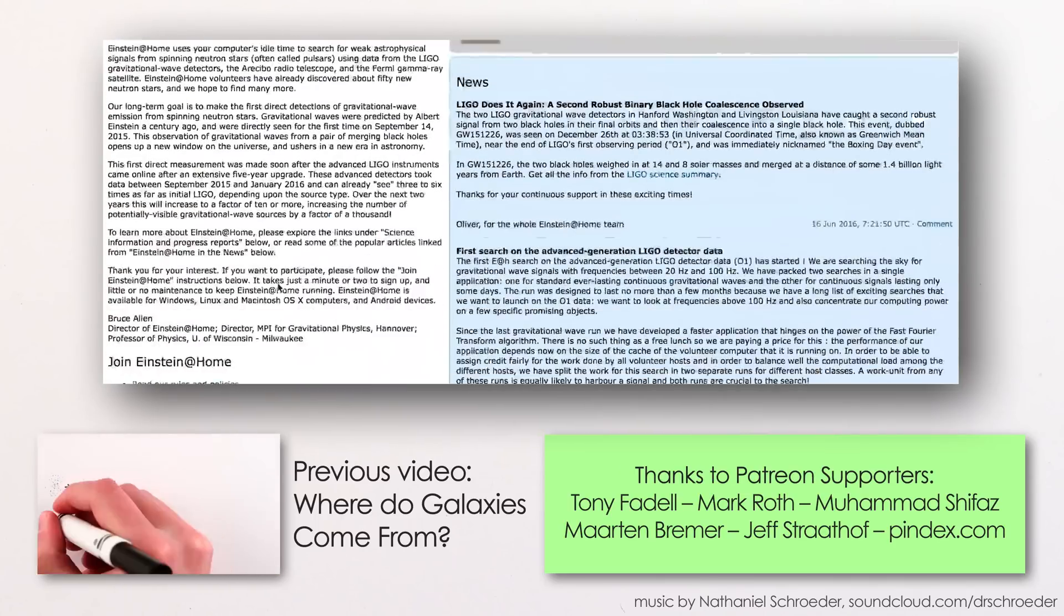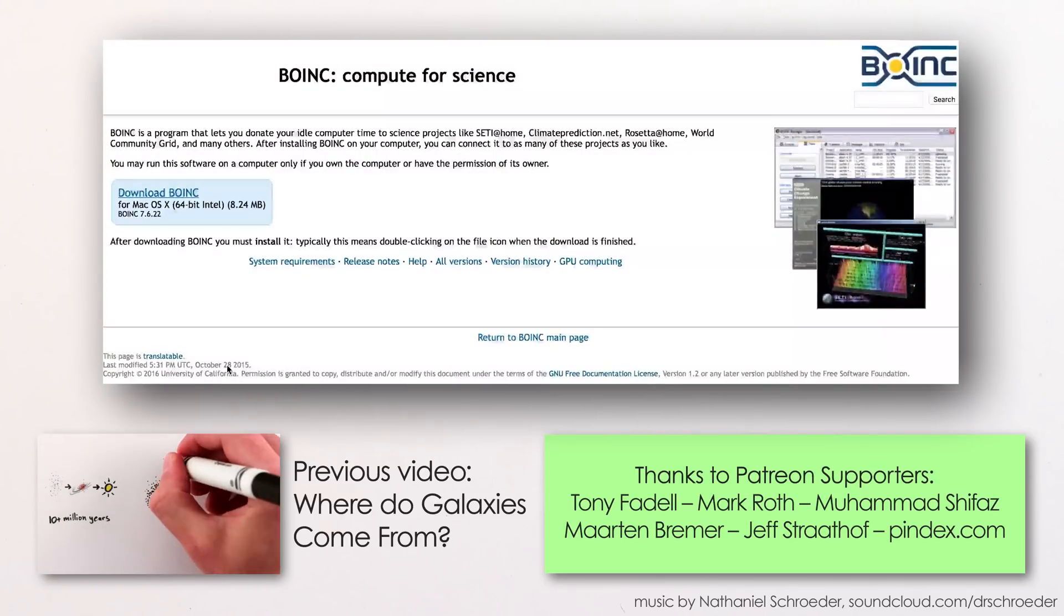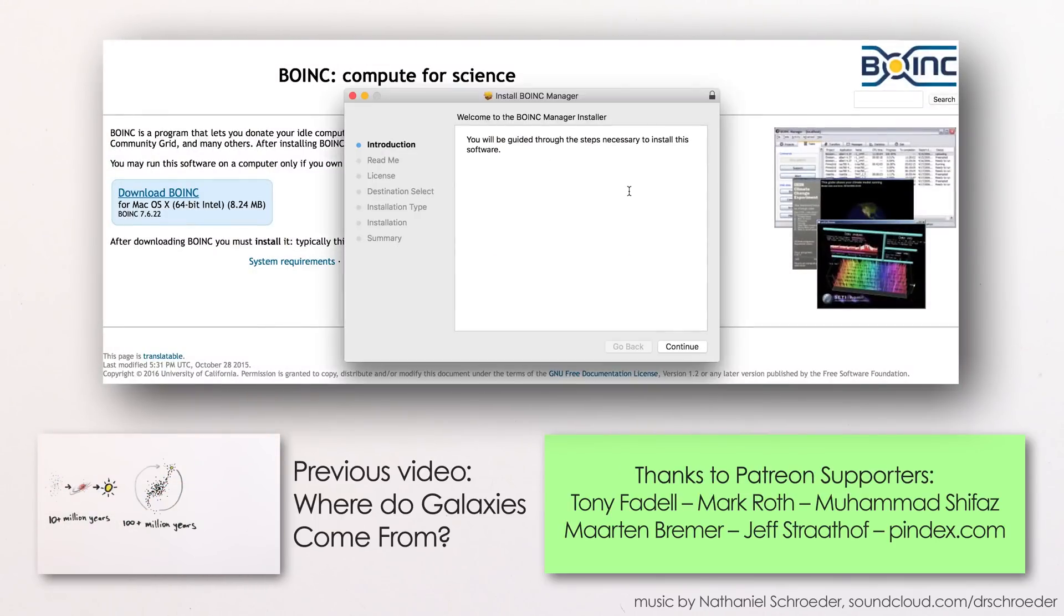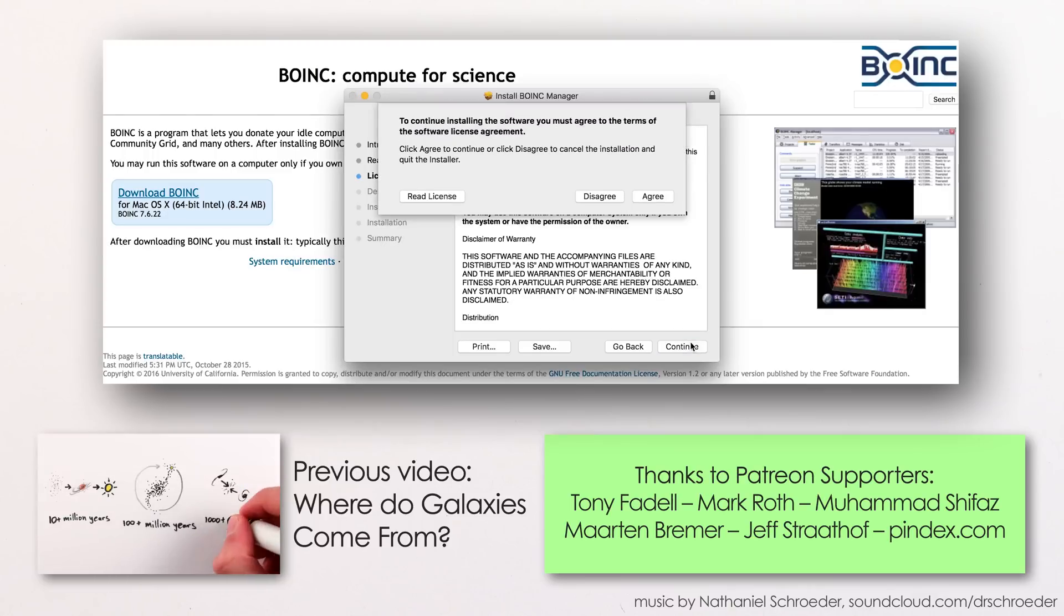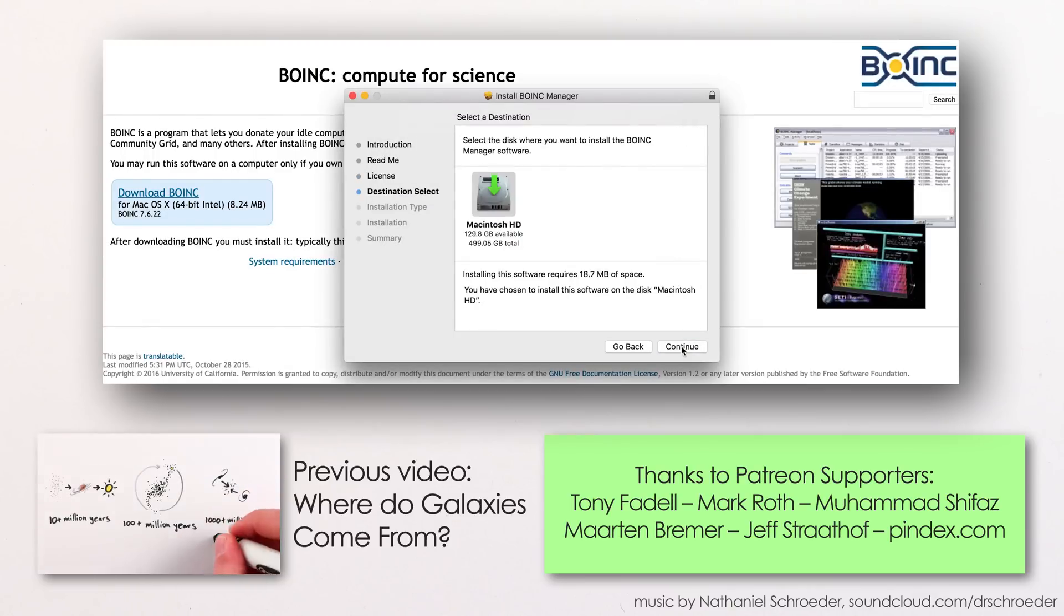If you'd like to help in the search for gravitational waves, there's a project called Einstein at Home which allows physicists to send calculations to your computer when you're not using it, and help directly in the search for super-fast-spinning neutron stars.